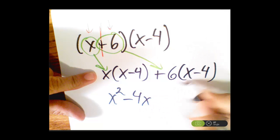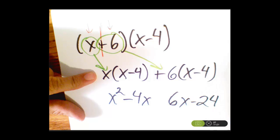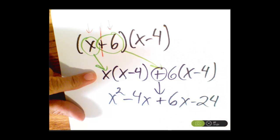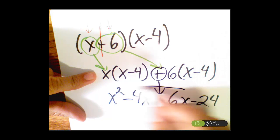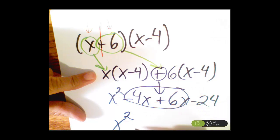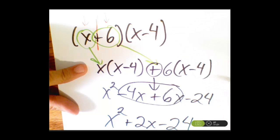Now I'm going to multiply this one: 6 times x, which gives me 6x, and 6 times negative 4, which gives me negative 24. I take this plus, because it was a positive, and drop it back down. Then I go ahead and work this out. I see that I have like terms in the x's, so I put them together, and I'm left with x squared plus 2x minus 24. And that is how I multiply my binomials without doing FOIL.